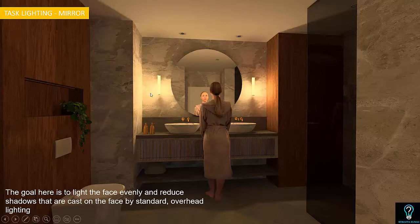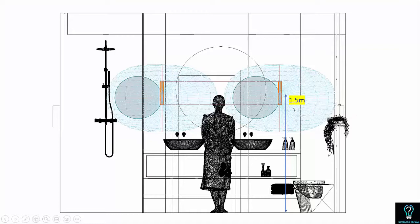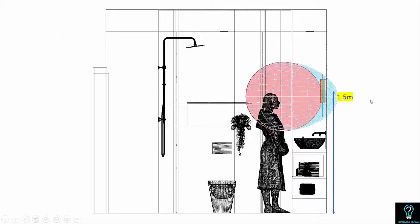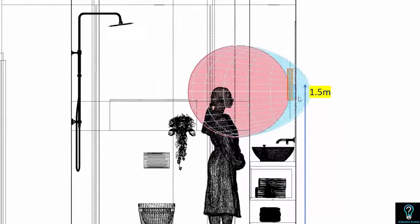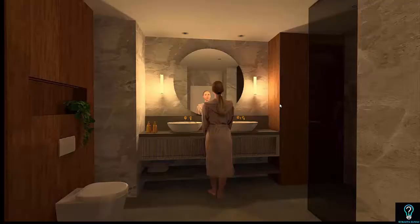When placing wall sconces, a standard height of 1.5 meters is considered good. At this height the light output — as shown by the blue light distribution curves — covers the face of the person standing there. In the side view you can see the wall sconce placed at 1.5 meters from floor level, with the light in line with the face, covering it fully for uniform distribution.